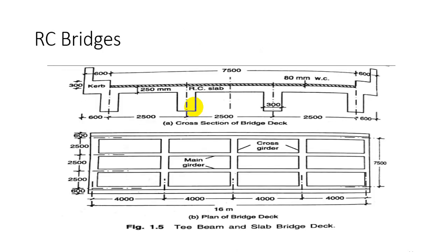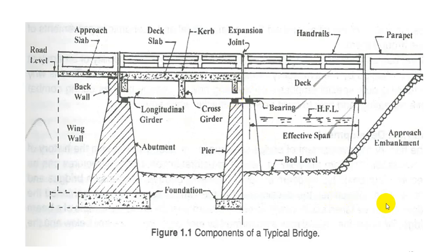A typical RC bridge is shown here, mainly consisting of main girders and cross girders, with a span of 16 meters. Along the length, the main girders are situated, and cross girders run perpendicular to them. You can observe the main girders with a spacing of 2500 mm between them, cross girders, and an RC slab above.